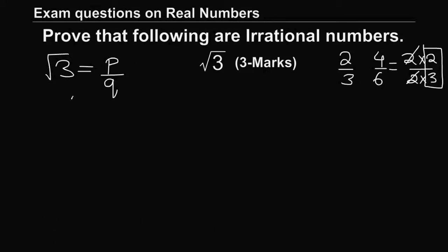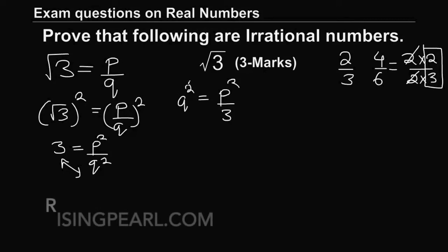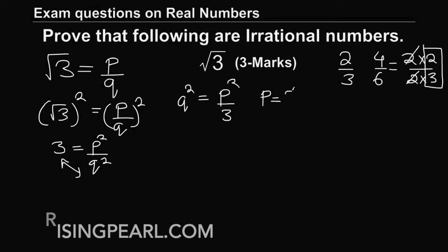So we assume square root 3 equals P by Q where P, Q are co-prime and Q is not equal to 0. Next, we square both sides to get 3 equals P squared by Q squared, or equivalently, Q squared equals P squared by 3. Since Q is an integer, Q squared is an integer, so P squared must be divisible by 3. From our theorem, if P squared is divisible by 3, then P is also divisible by 3, meaning P can be written as 3 times some integer A.